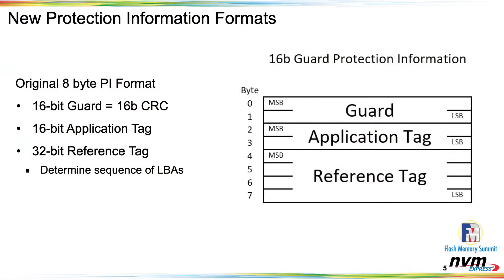We also brought in some new protection information. The original protection information was eight bytes long in the metadata of an LBA. It had a guard field, which is a 16-bit CRC. It had an application tag defined by the application — kind of opaque to the controller — with some specific values for checking. And then it had a reference tag, where as multiple LBAs are being transferred as part of a command, it guarantees the sequencing of those LBAs.